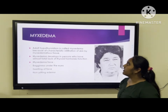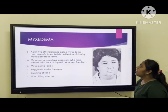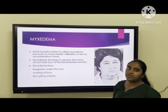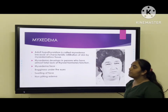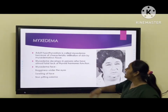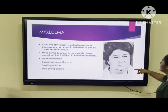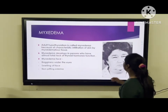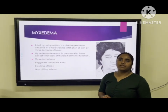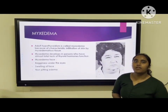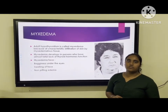Let's talk about myxedema. Adult hypothyroidism is called myxedema because of the characteristic infiltration of the skin by myxedematous tissue. Myxedema develops in persons who have almost total lack of thyroid hormone function. It presents with weakness under the eyes and swelling of the face, and it is non-pitting edema — meaning when pressed, it does not pit, due to accumulation of protein with hyaluronic acid and chondroitin sulfate.